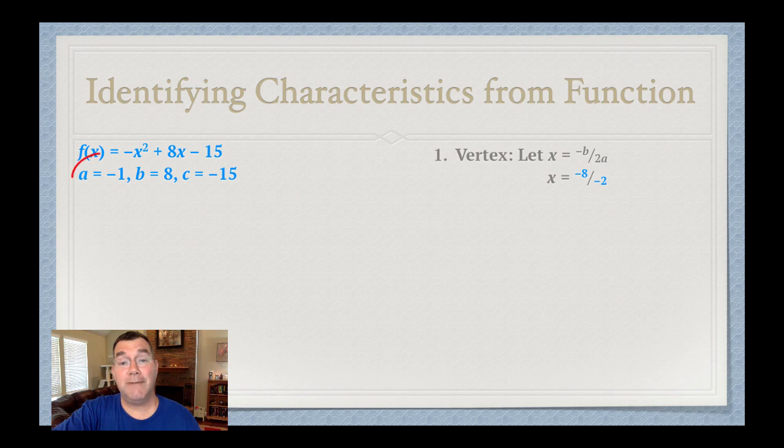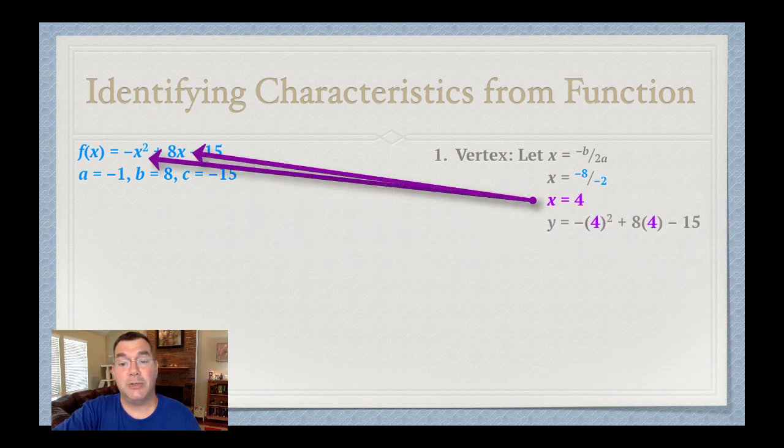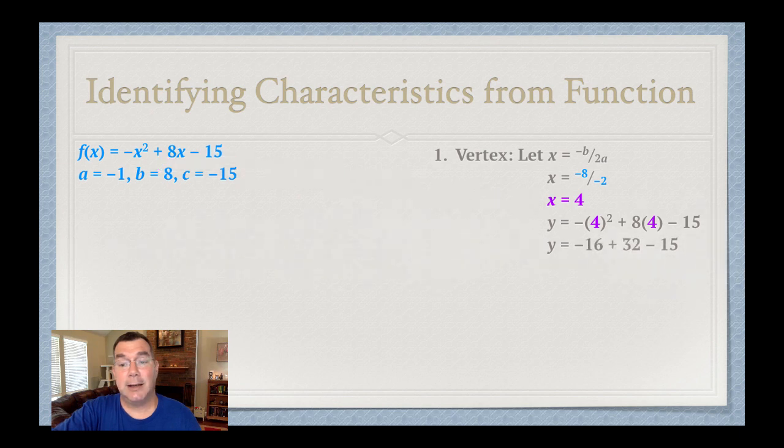So plugging in my values of a and b in there, I get that x is negative 8 over negative 2, which can be reduced to 4. Now to figure out the y-coordinate of the vertex, I'm going to take that x and plug it into my original function. Everywhere there's an x, I'm going to replace that with 4. And if I do that, I get 1. So my vertex is at 4 and 1.